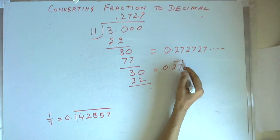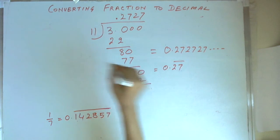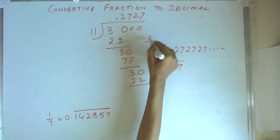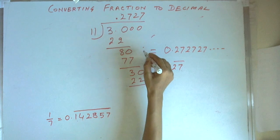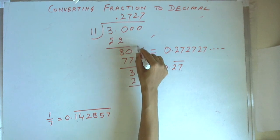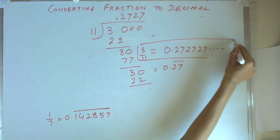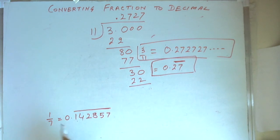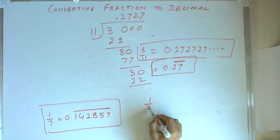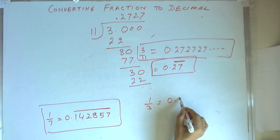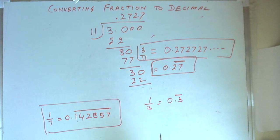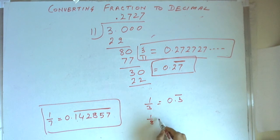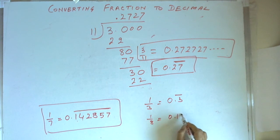As we have seen in case of 3 by 11, we write it with a bar over 27. In case of 1 by 7, we write it with a bar over 142857. In case of 1 by 3, we saw 0.3 with a bar. And in case of a terminating fraction like 1 by 8, the answer is 0.125.